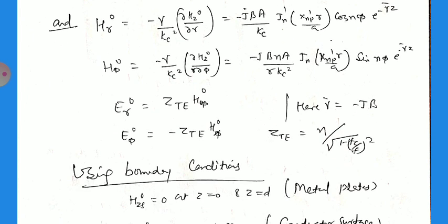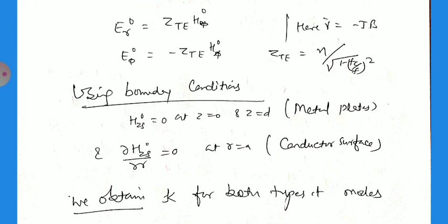The radial component of the electric field Er0 equals ZTE times Hphi0, and Ephi0 equals minus ZTE times Hr0. Here ZTE is the characteristic impedance for the TE mode and equals eta divided by square root of (1 - fc/f)². Boundary conditions: Hz0 equals 0 at z=0 and z=d at the metal plates, and del Hz/del r equals 0 at r=a at the conductor surface.